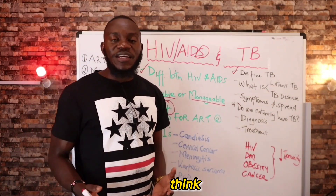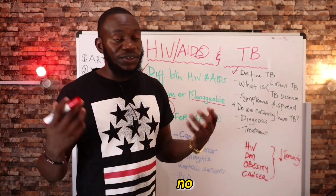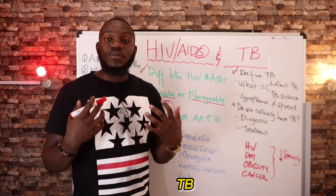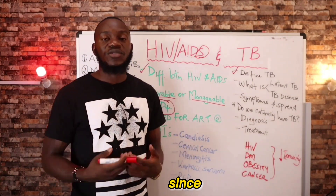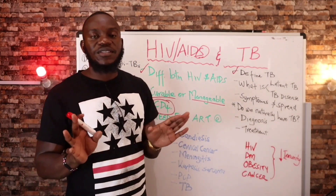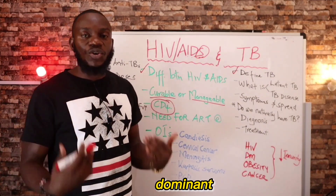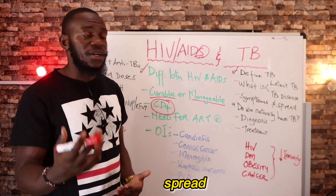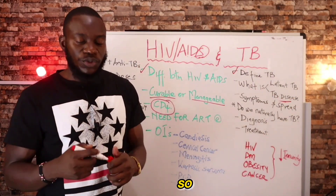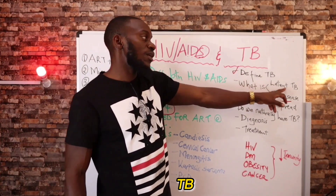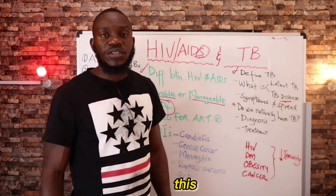Some people think you were born naturally with TB — no, you are not. People are not born with TB; people acquire TB from the environment. Once you acquire TB and your immunity is high, the TB is overwhelmed and goes into the latent stage where it is dormant and doesn't spread. However, TB disease is where the symptoms start to show, and latent TB can grow into TB disease.